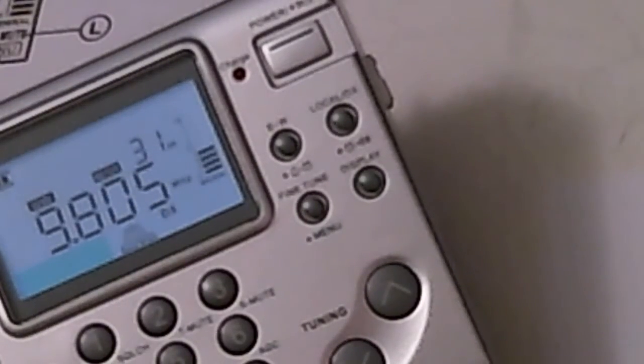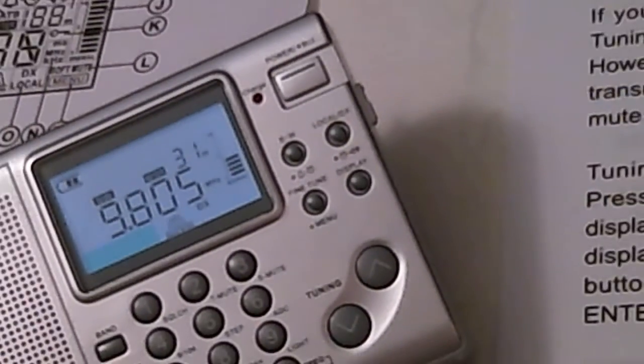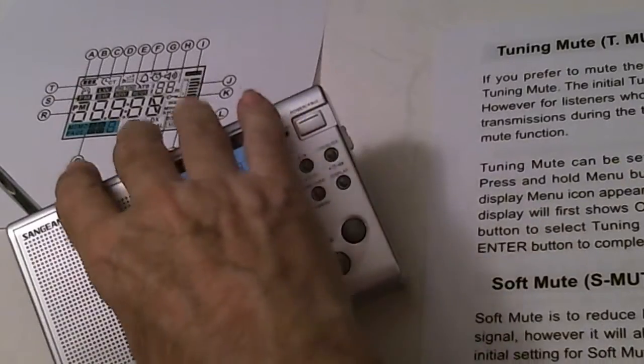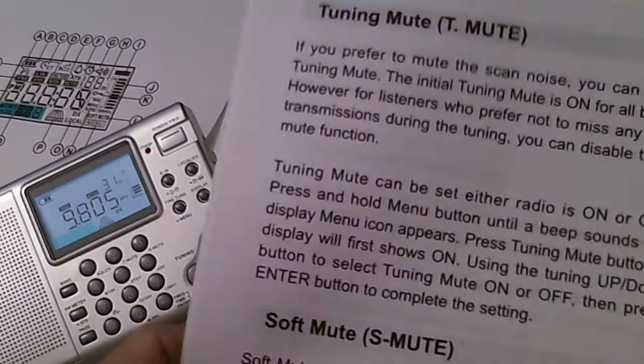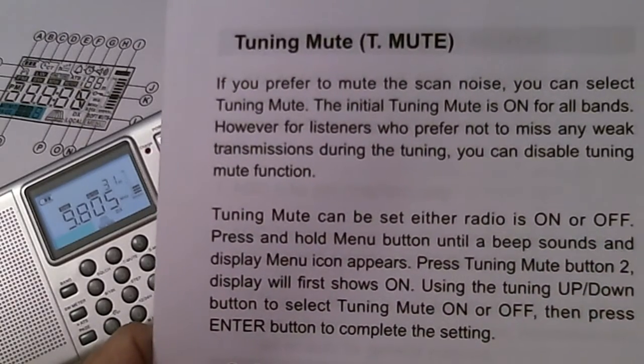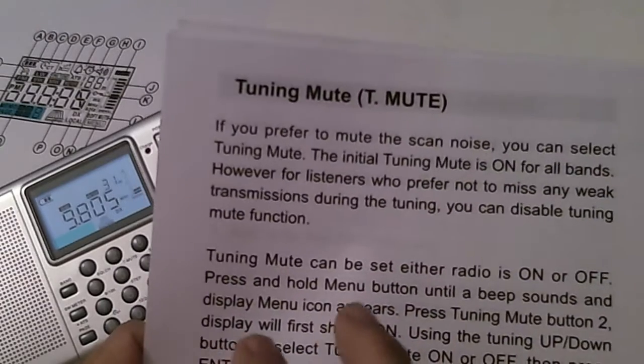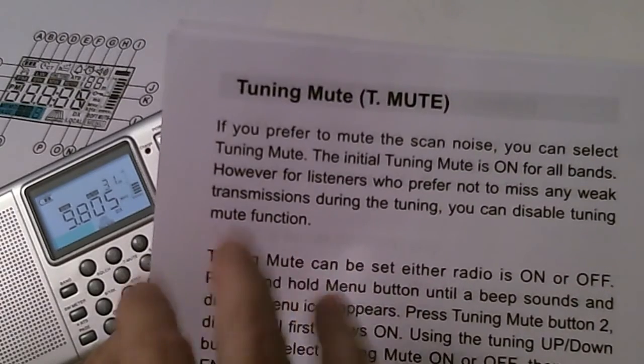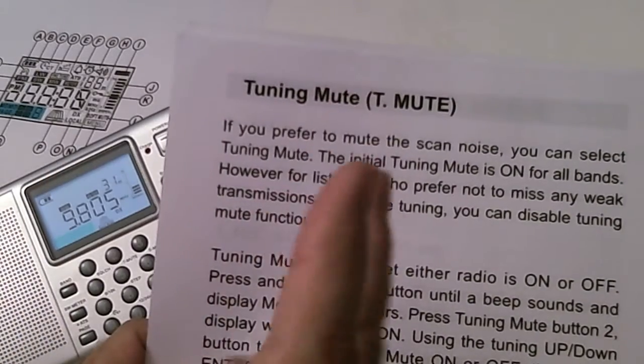Okay, the next function that I mentioned before, let me zoom out so you can see the manual. Again, you can find this manual online. It's available. And you can download the manual and go through the entire manual. I'm not going through the entire manual. I'm just going through certain functions that are not unique to this radio, but are incorporated in this radio. And the question is, how well do they work?